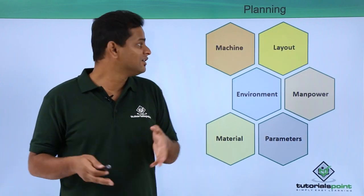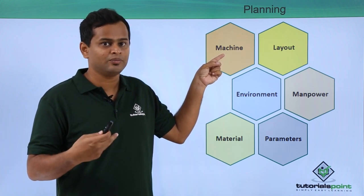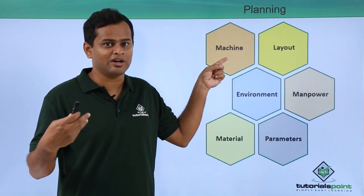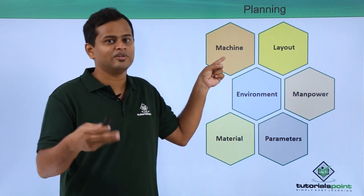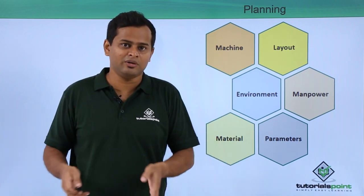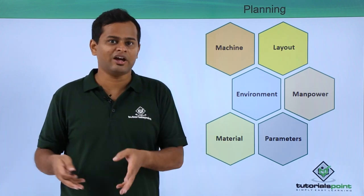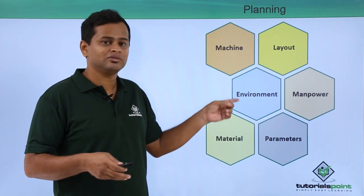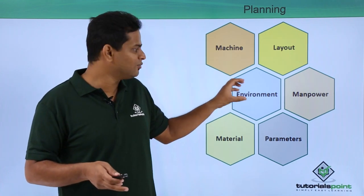In planning, we need to understand that machine selection is going to be crucial, because a wrong machine selection can produce a lot of bad parts. The maintenance of that particular machine also plays a very important role when we talk about machine selection. Layout means what kind of production layout you are going to have and what kind of environment — whether you are going to have a single-place flow or a unidirectional flow in certain temperature and certain relative humidity — all these things play an important role.